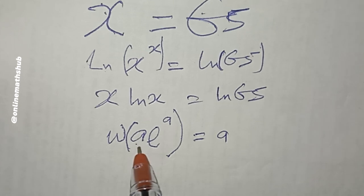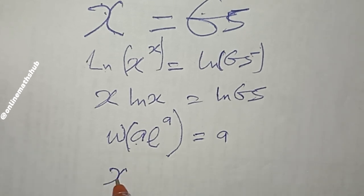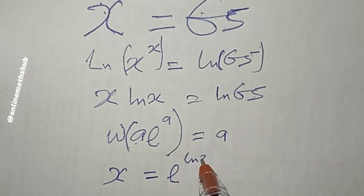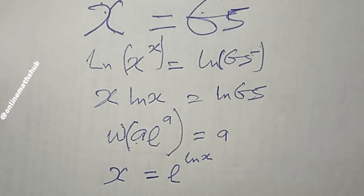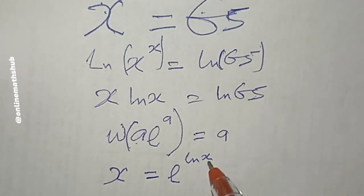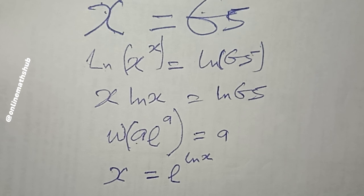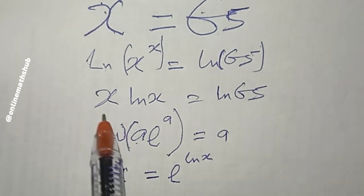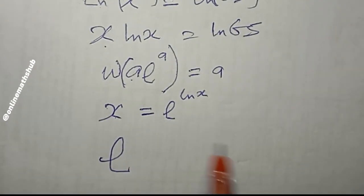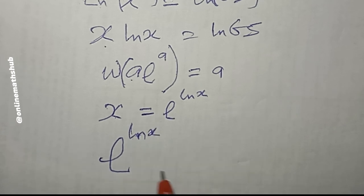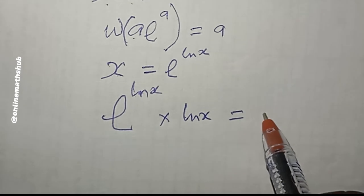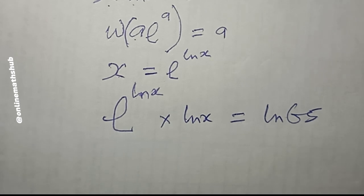To do that, recall that you can write x as e^(ln x), since e^(ln x) = 1·x = x. I'll replace x with e^(ln x), so my equation now becomes: e^(ln x) · ln(x) = ln(65).